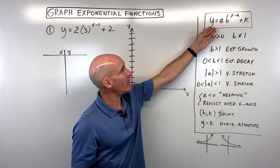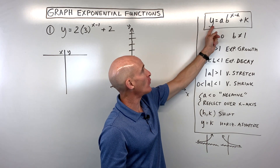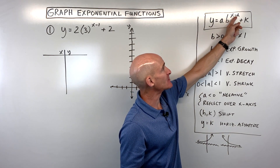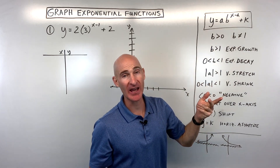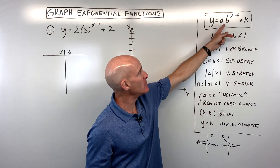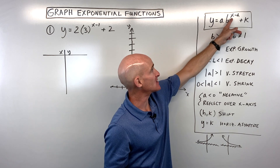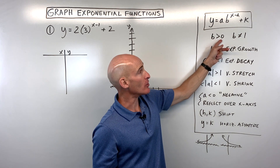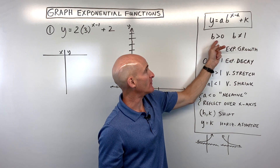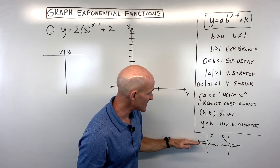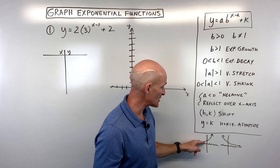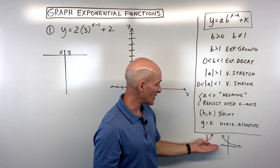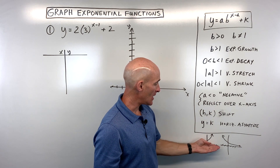When we talk about an exponential function, it's a function in the form y equals a times b to the x minus h power plus k. This b is referred to as the base. When the base is greater than zero — and the base can't be one — it tells us that it's an exponential growth function, meaning it's going up to the right. It's going to have a horizontal asymptote.